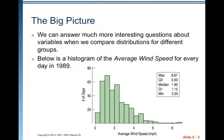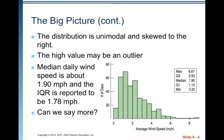We can answer much more interesting questions about variables when we compare distributions for different groups. Below is a histogram of average wind speed for every day in 1989. The distribution is unimodal and skewed to the right. The high value may be an outlier. You can see it's over far to the right past 8. The median daily wind speed is about 1.9 mph, and the IQR is reported to be 1.78 mph. Can we say more about this?